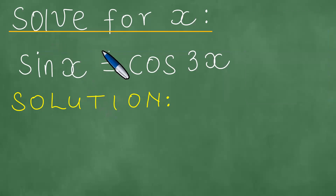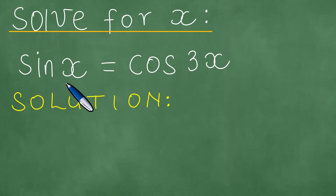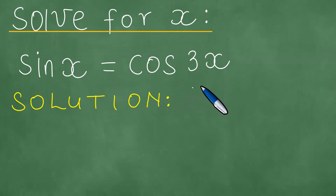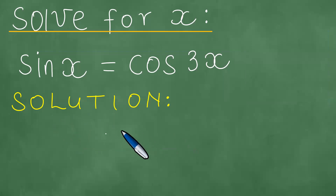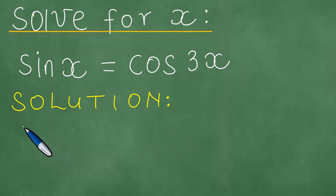We need to solve for x, given that sine of x equals cosine 3x. We proceed to write down the solution to the problem and begin as follows.